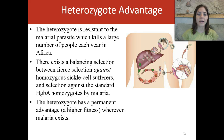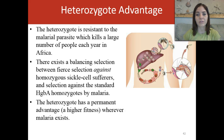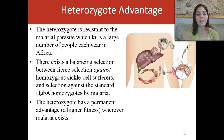The sickle cell disease is caused by a single base substitution mutation. It is maintained in the population in a state of balanced polymorphism because of the protective effect against malaria conferred by the heterozygous state. The heterozygote is resistant to the malarial parasite, which kills a large number of people each year in Africa. There's a balancing selection between the fierce selection against homozygous sickle cell sufferers and the selection against the standard homozygous genotype by malaria. The heterozygote has a permanent advantage and higher fitness wherever malaria exists.